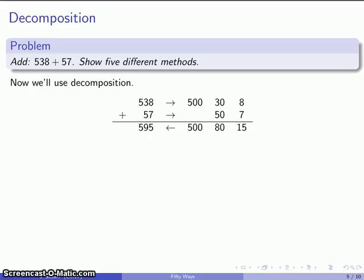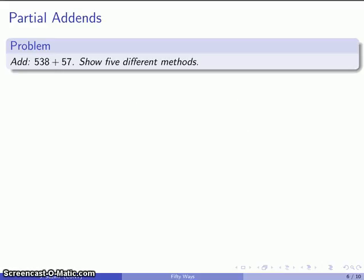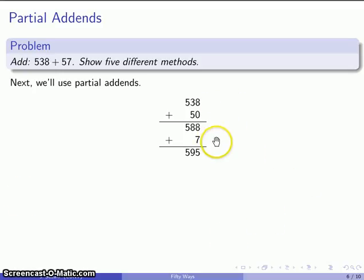Another way we could do this problem is through partial addends. I don't have to add 57 all at once, I can add it in pieces. So we'll take our first addend, 538, and I'll add 50, and that gets me up to 588, and then I'll add 7, that gets me up to 595, and altogether I've added 57, which is what I wanted to do.